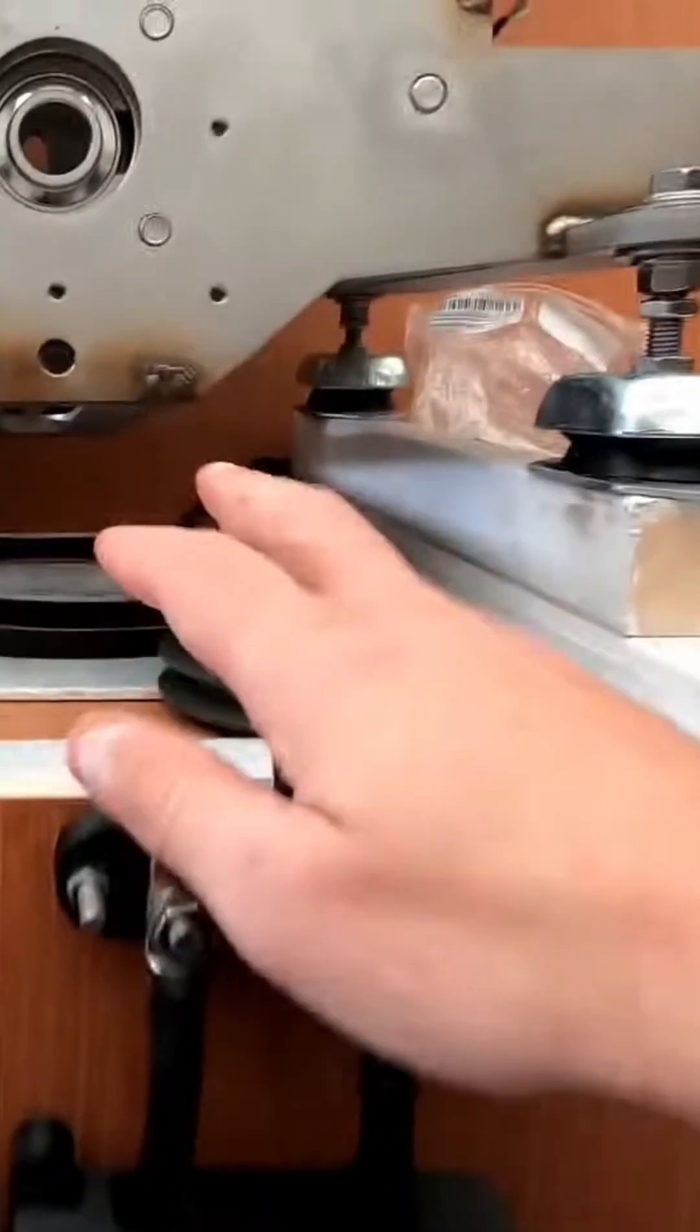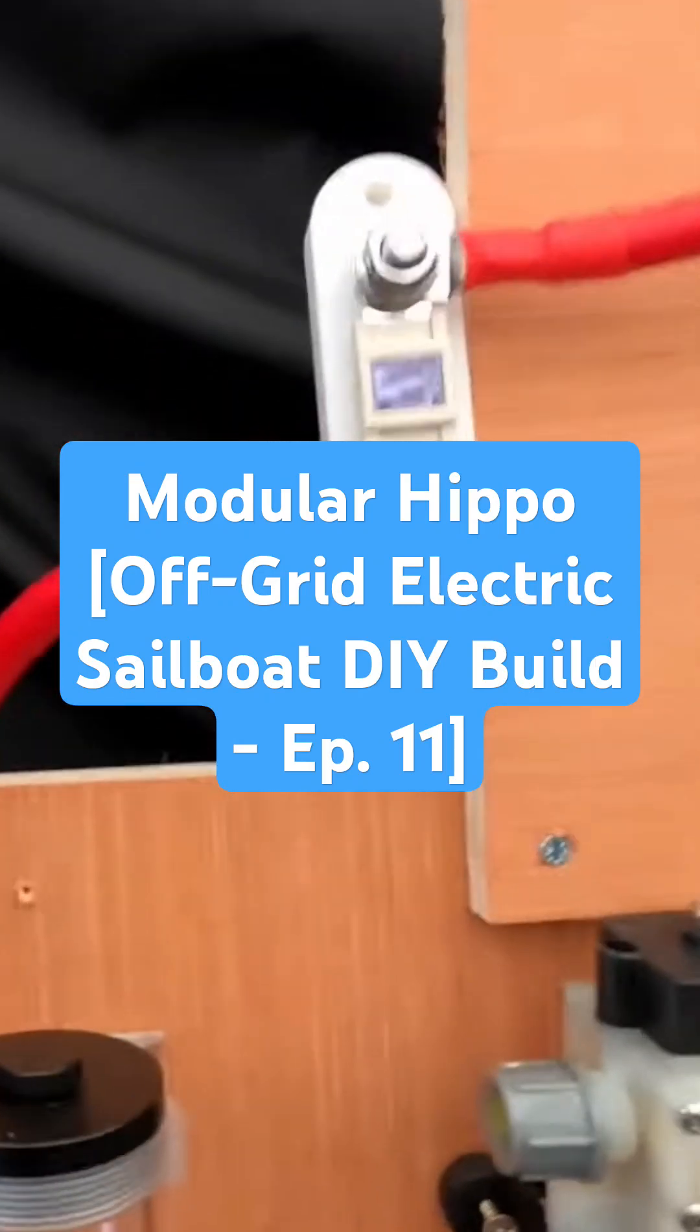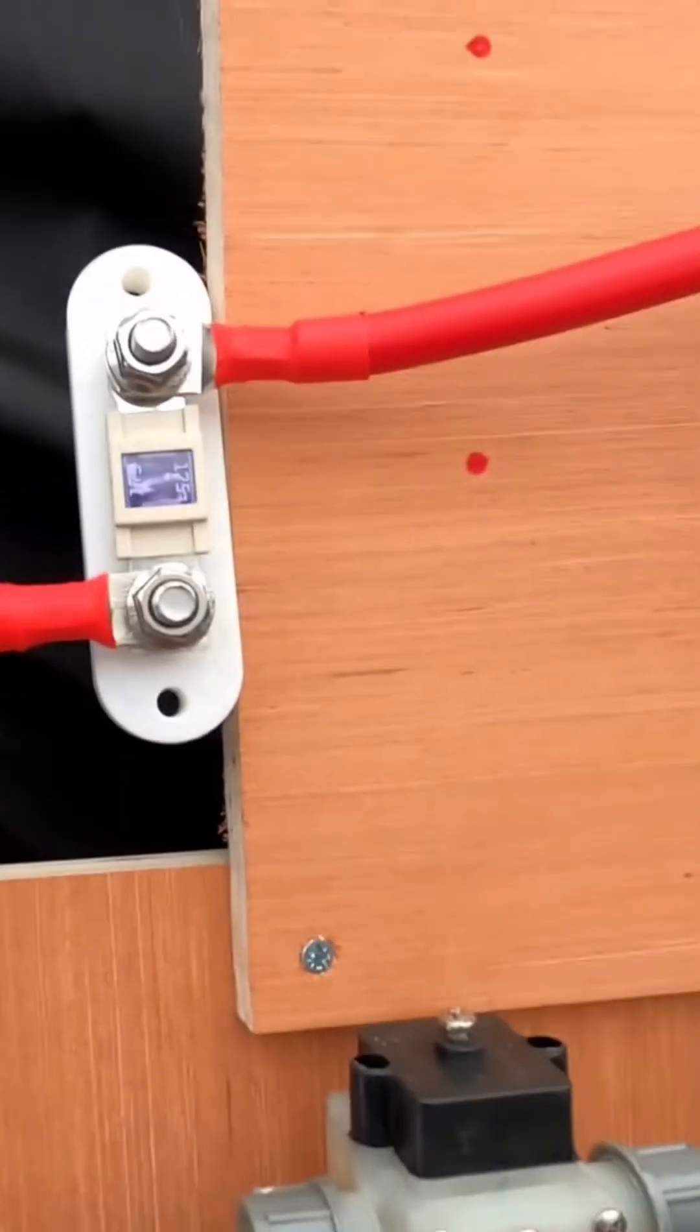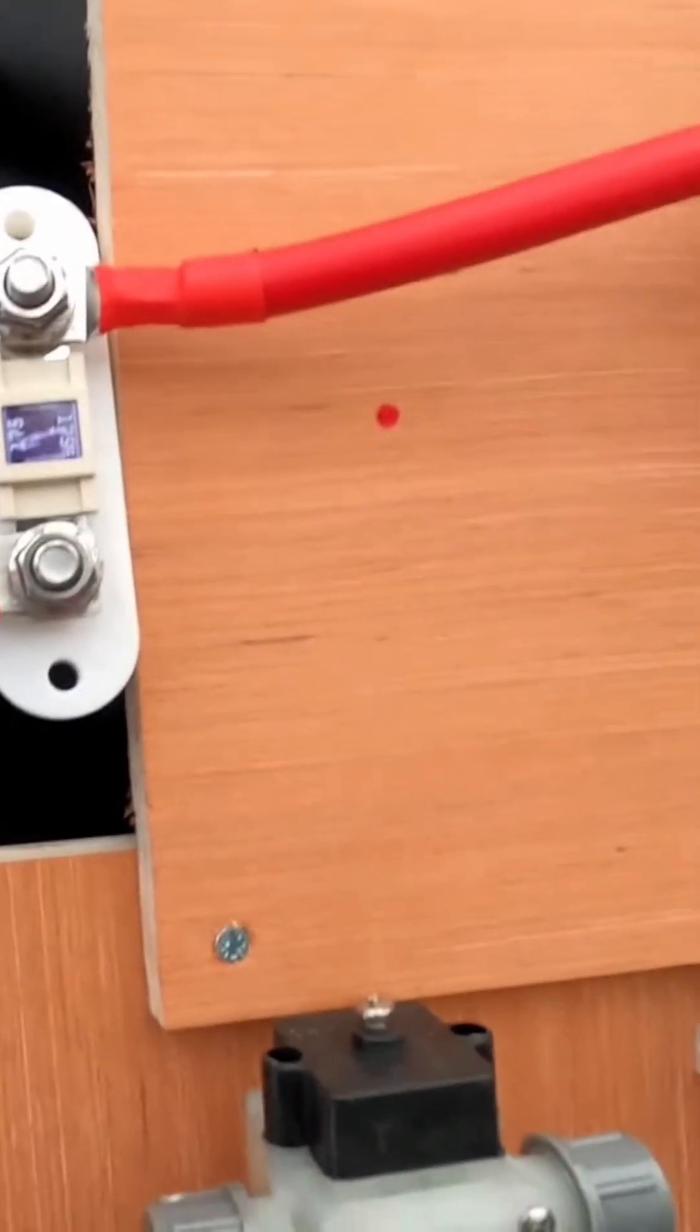Later on it goes behind here and it comes up and comes in this way. So up here I have another 175 amp fuse and that's the fuse that I will have on the main switchboard and I've put that